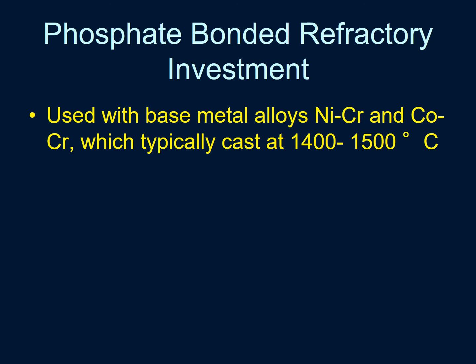A phosphate bonded investment material is used with most base metal alloys, such as nickel chromium and cobalt chromium alloys. They typically are cast at temperatures between 1,400 and 1,500 degrees Celsius. In this case, gypsum bonded investments cannot be used because they would disintegrate.